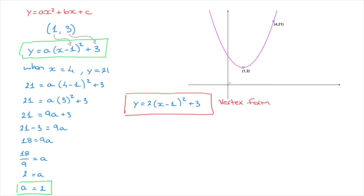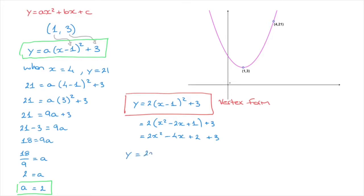As mentioned at the beginning, we typically need to find all three coefficients a, b, and c. To do that, we open up the parentheses in the vertex form: 2 times x minus 1 squared equals 2 times x squared minus 2x plus 1, plus 3. Distributing the 2 gives 2x squared minus 4x plus 2 plus 3. Simplifying, we find y equals 2x squared minus 4x plus 5. Comparing to ax squared plus bx plus c, a equals 2, b equals negative 4, and c equals 5.